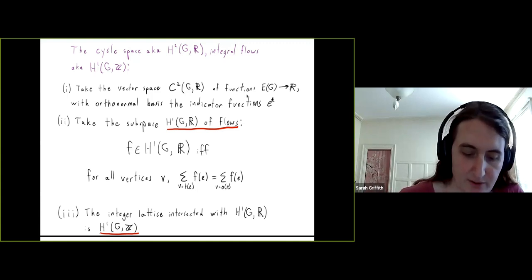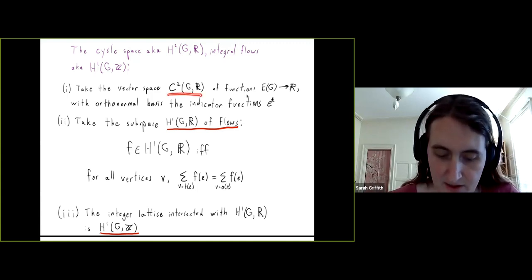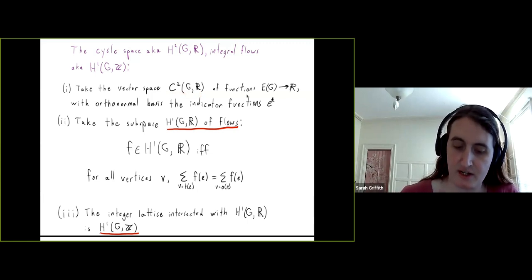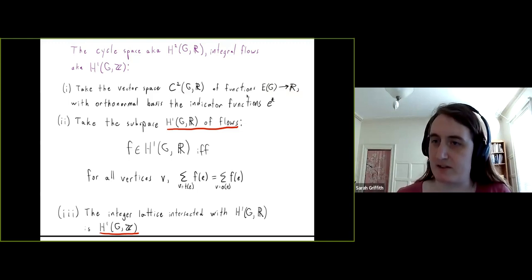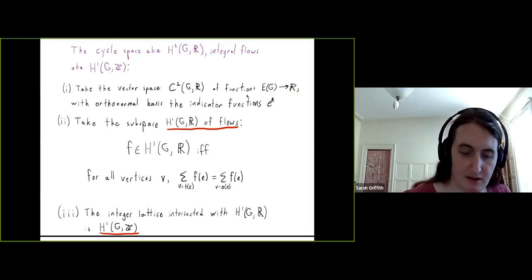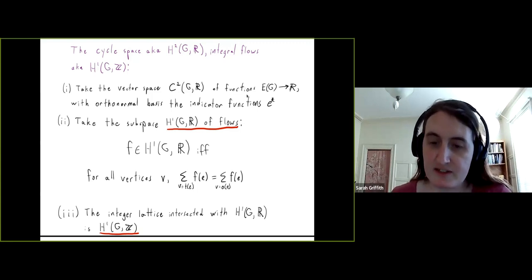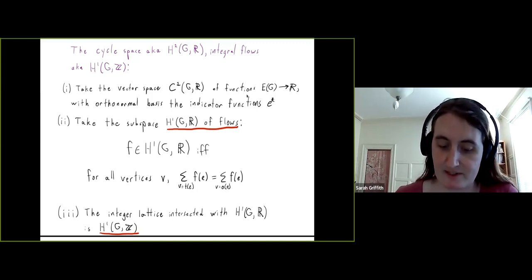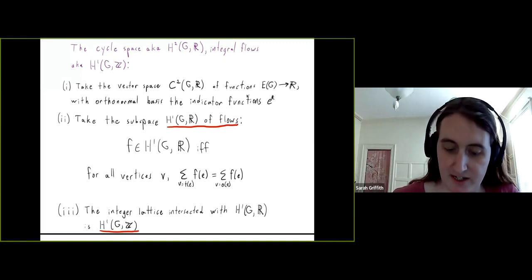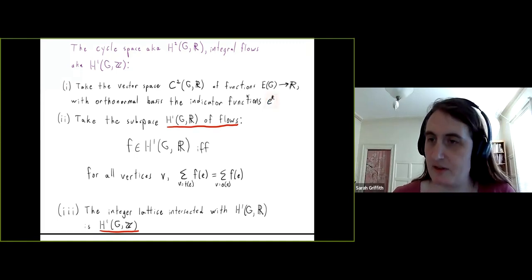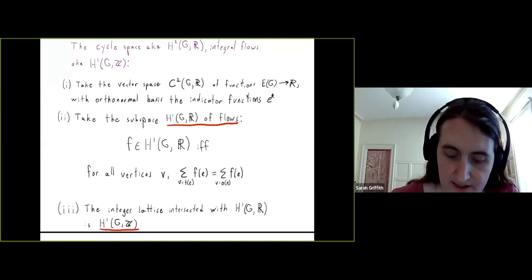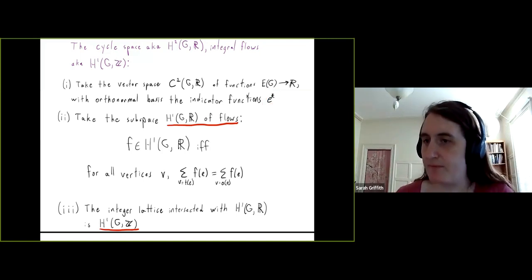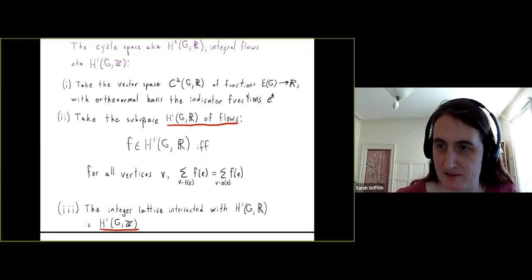First, you have a vector space of one co-chains on G — these are functions from the edges of G to R, which you can think of as weightings of the edges. This has a canonical orthonormal basis consisting of the indicator functions for particular edges. If I have an edge E, I denote its indicator function by E-star or E-dual — this is our basis that we always think about.